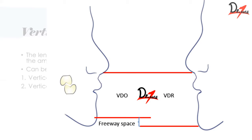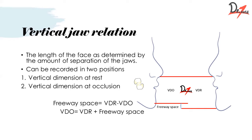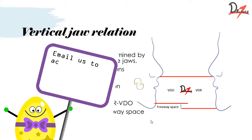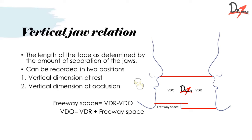The freeway space is calculated as VDR minus VDO, and it is around 2 to 4 mm. To calculate VDR, you will ask your patient to swallow or say 'M', then ask the patient to relax with head upright, swallow and say 'M', and then calculate the distance from the tip of the nose to the tip of the chin. That distance will be your VDR. Then you will go and calculate your VDO.